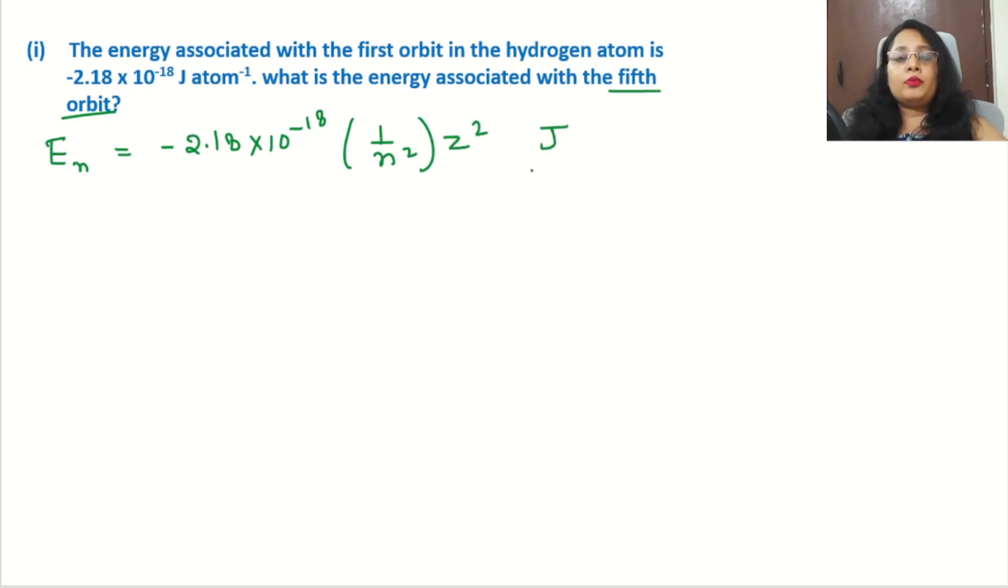Directly we will put the values in the formula. Fifth orbit means n = 5. So we can write E5 = -2.18 × 10^-18 × (1/5²) × z². Now 5² = 25, and z = 1 for hydrogen because z is atomic number and hydrogen's atomic number is 1.